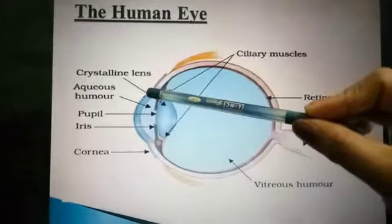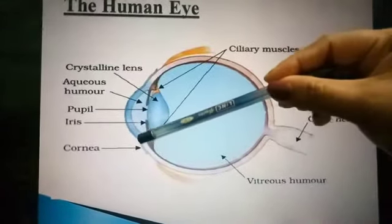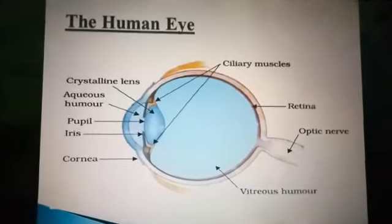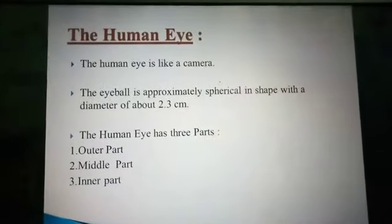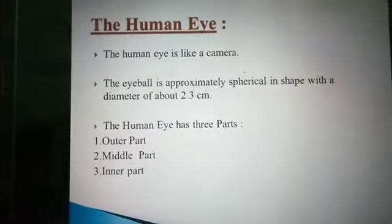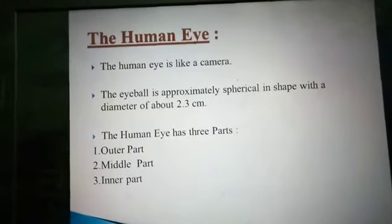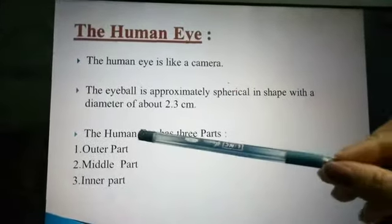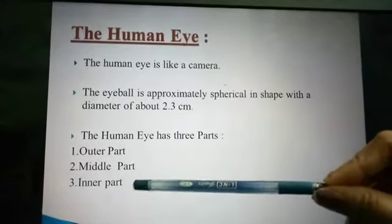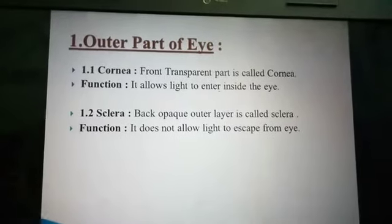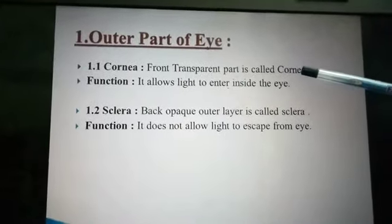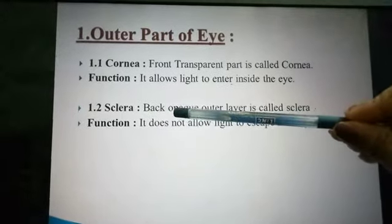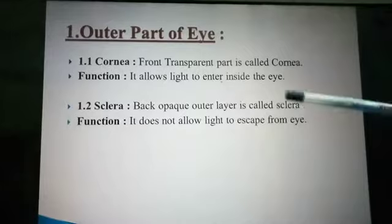Here is the structure of the human eye. The front portion is known as the cornea, and the back one is known as the sclera. The human eye is like a camera and the eyeball is approximately spherical in shape, with a diameter of approximately 2.3 centimeters. The human eye has three parts: outer part, middle part, and inner part. The outer part includes the front transparent part — the cornea — which allows light to enter inside the eye, and the back outer portion is the sclera, which is a black opaque outer layer.